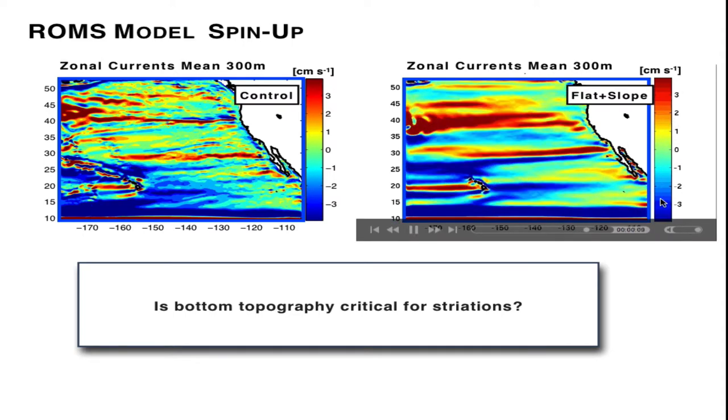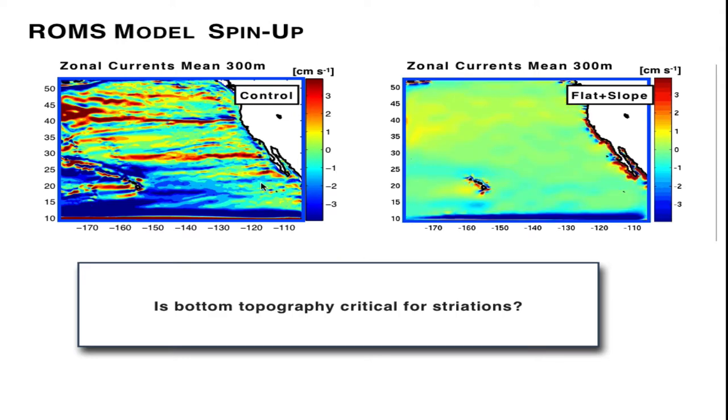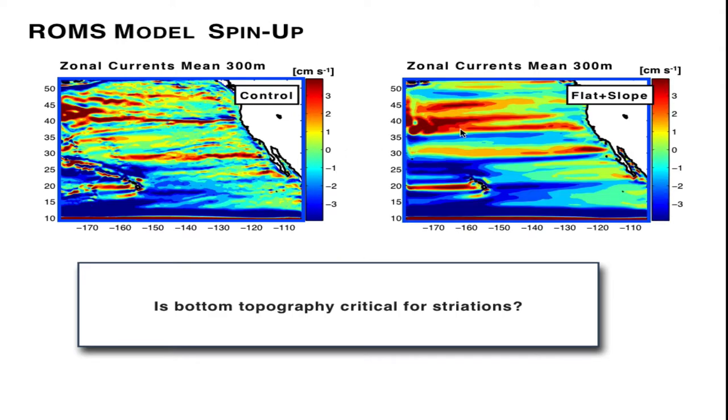If you look at the magnitude of this striation, we find that it's comparable to the full control run. Not only that, perhaps the main important difference is that the striations here seem to be more coherent and less noisy. In some sense, the topographic features in the interior are important in that they produce some noise in the striations, but they're not critical in terms of the development.